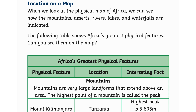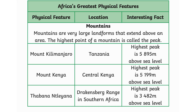The following table shows Africa's greatest physical features — can you see them on the map? Mountains are very large landforms that extend above an area. The highest point of a mountain is called the peak.